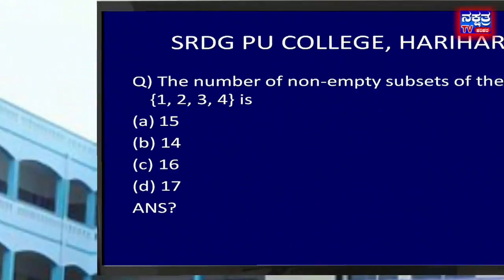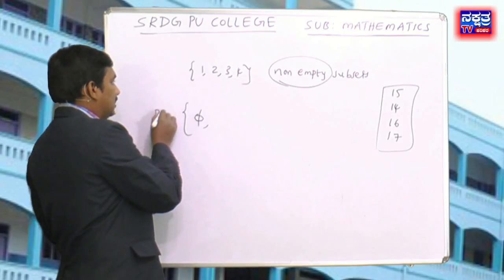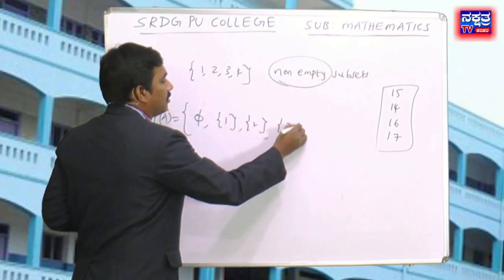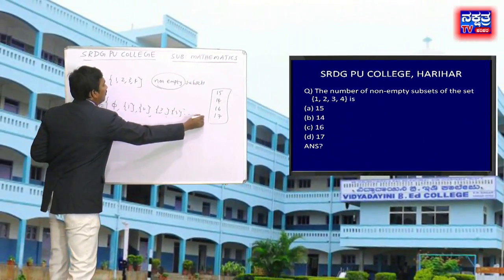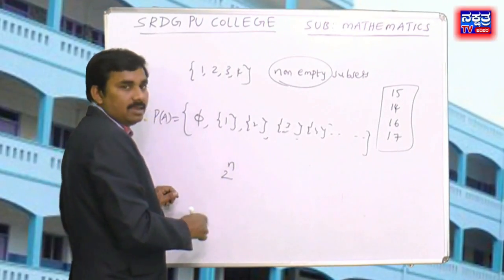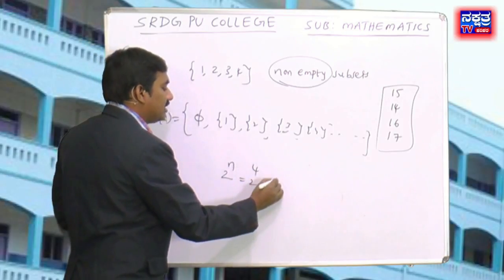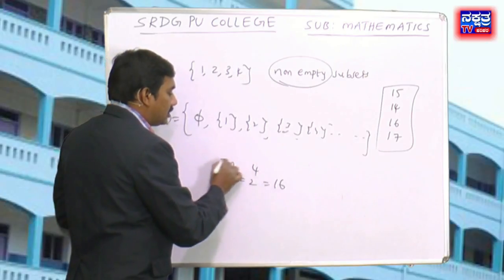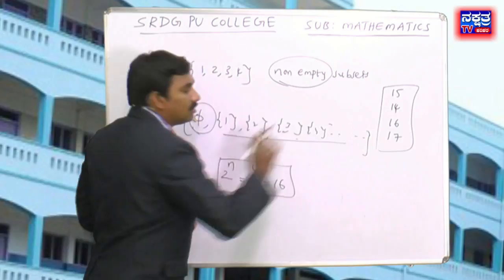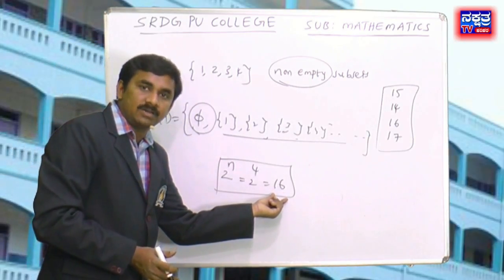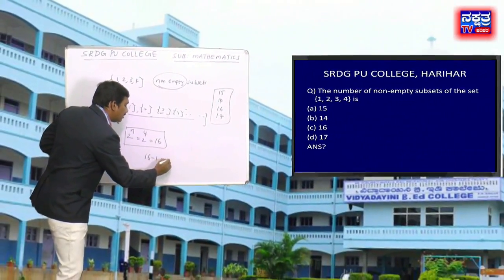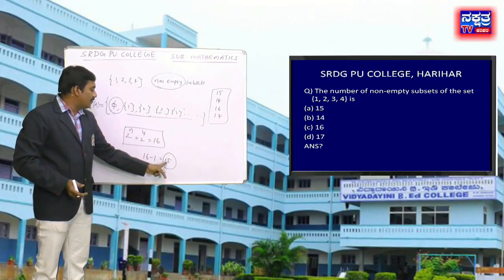Non-empty subsets: the power set starts with the empty set, then singleton elements {1}, {2}, {3}, {4}, then double, triple, and four-element subsets. The formula for total number of subsets is 2^n, where n is the number of elements. So 2^4 = 16. But this includes the empty set (just one). For non-empty subsets, subtract 1: 16 minus 1 = 15.